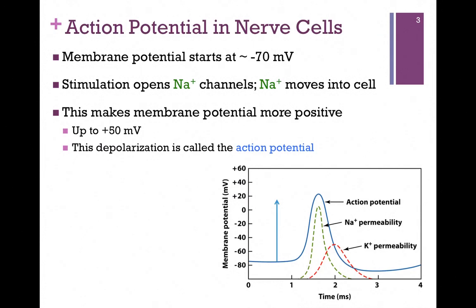Recall from our last lesson that the cell maintains a membrane potential starting at about minus 70 millivolts. We want to see how this membrane potential changes as the action potential moves. In our graph here at the bottom of the screen, the membrane potential in millivolts is on the y-axis and time in milliseconds is on the x-axis.